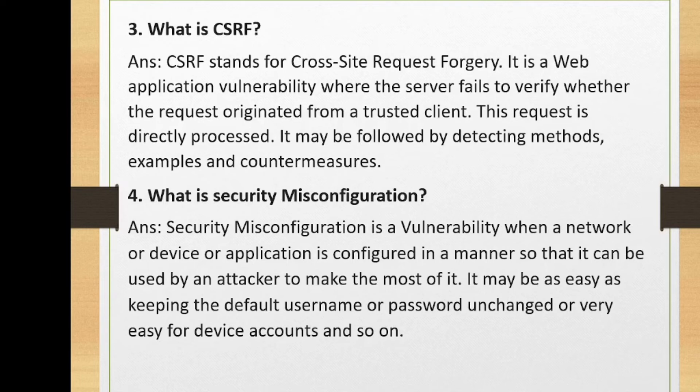What is security misconfiguration? Security misconfiguration is a vulnerability when a network, device, or application is configured in a manner that can be exploited by an attacker. It may be as easy as keeping the default username or password unchanged. For example, when you install a server application and set the database password as 'root' with '123' — that is a wrong way of keeping credentials, and an attacker can easily predict the default username and password.